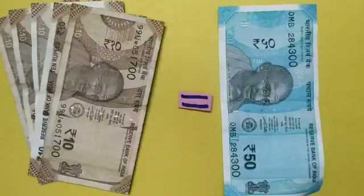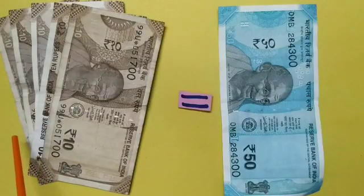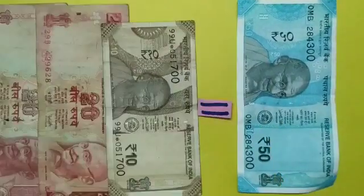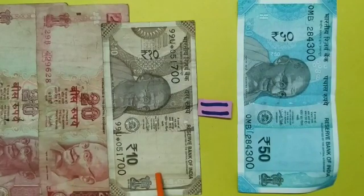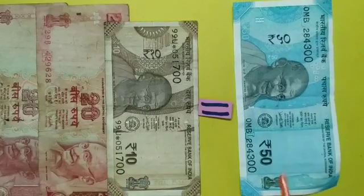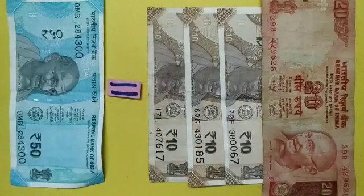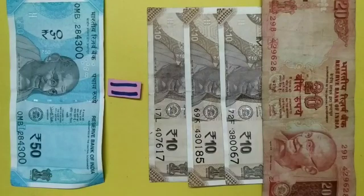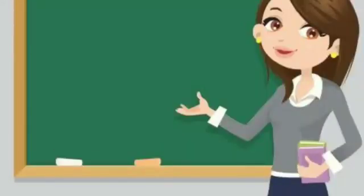In place of 10 notes of 10 rupees, we can take a 50 rupee note. As well as, in place of 2 notes of 20 rupees and 1 note of 10 rupees, we can also take a 50 rupee note. On the other hand, if we want small denomination notes in place of a 50 rupee note, we can take 3 notes of 10 rupees and 1 note of 20 rupees.